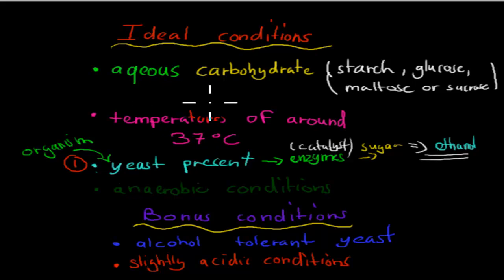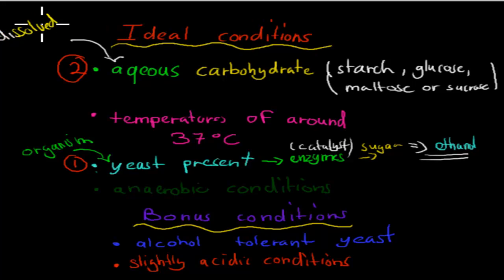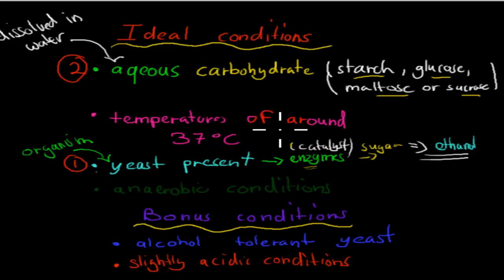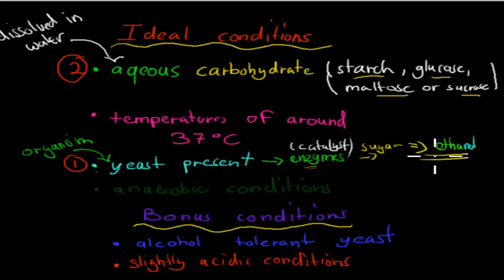The second condition is aqueous carbohydrates. Aqueous means dissolved in water. We want carbohydrates — which are usually sugars such as starch, glucose, maltose, and sucrose — to be dissolved in water. This is because the enzymes produced by the yeast need to come into contact with the carbohydrates to break them down. If they're not dissolved, the enzymes can't act on them. And of course, we need carbohydrates because they are the starting material for producing ethanol.